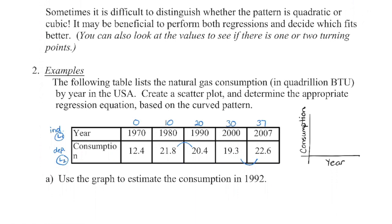Take a look at the table of values and first identify the independent variable and the dependent variable. We're comparing natural gas consumption over time in the United States, so time is the independent variable. The amount of gas consumed depends on what year we're in. I'll make a quick sketch, label the axes, and then the independent data goes into list one and the dependent data goes into list two.